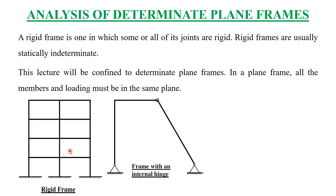A rigid frame is one in which some or all of its joints are rigid. Rigid frames are usually statically indeterminate. This lecture will be confined to determinate plane frames. In a plane frame, all members and loading must be in the same plane — whether that is the XY, YZ, or XZ plane — concentrating on only two axes.